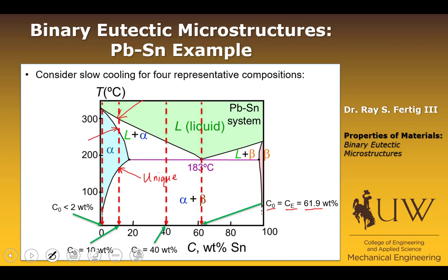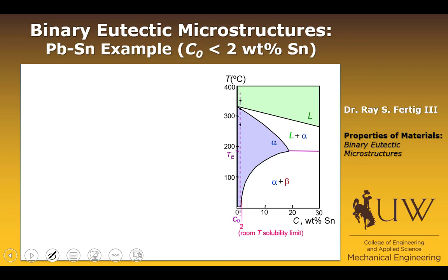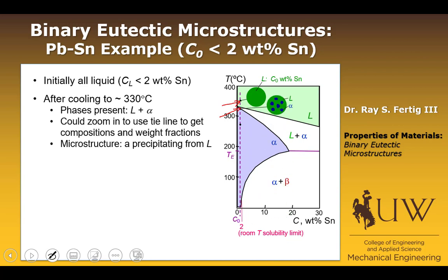Let's do the easy one first — a composition of less than 2 weight percent tin. At the starting point, it's all liquid, and the composition of the liquid is less than 2 weight percent tin, whatever C0 happens to be. Cooling just inside the liquid plus alpha region, our phases present are liquid plus alpha. We could draw a tie line to get phase compositions and use those to get weight fractions. Basically, we have some alpha phase precipitating out from the liquid — alpha particles floating or precipitating out of the liquid.